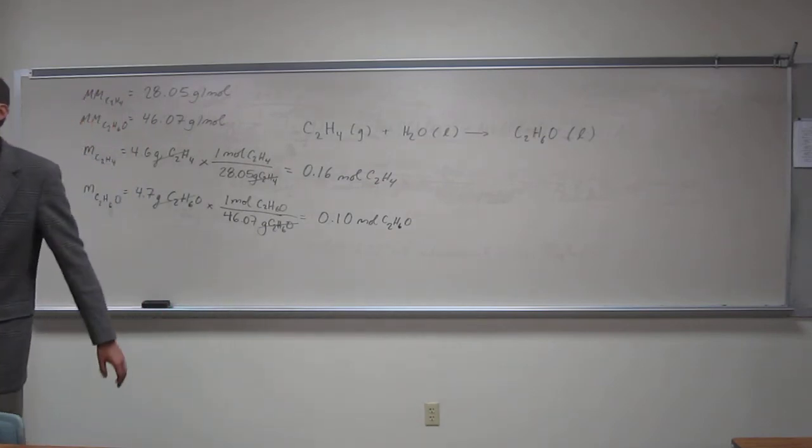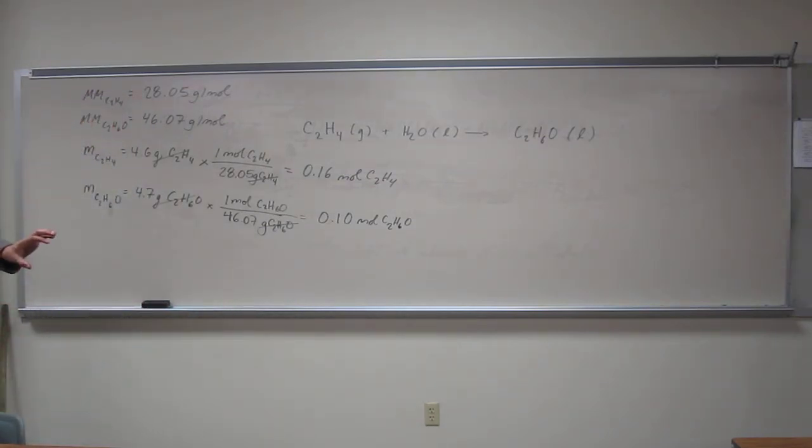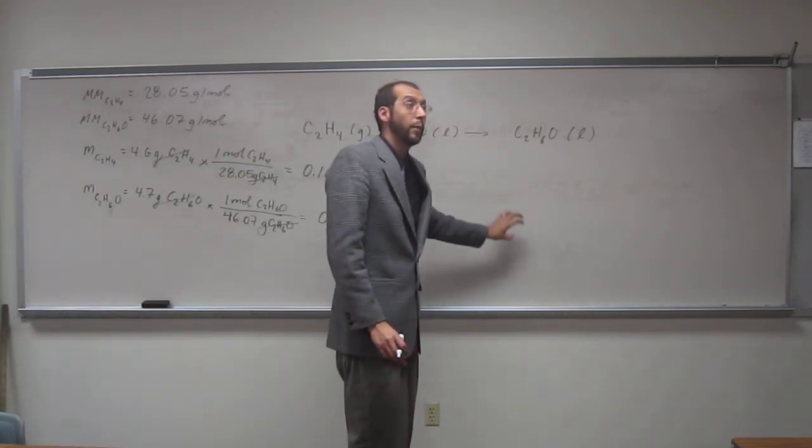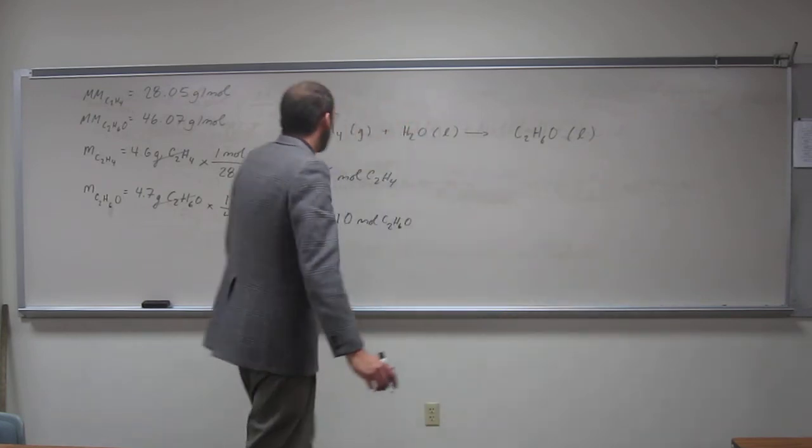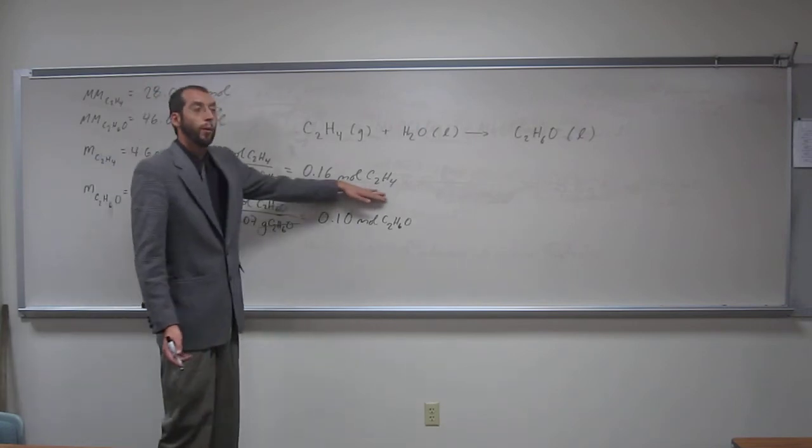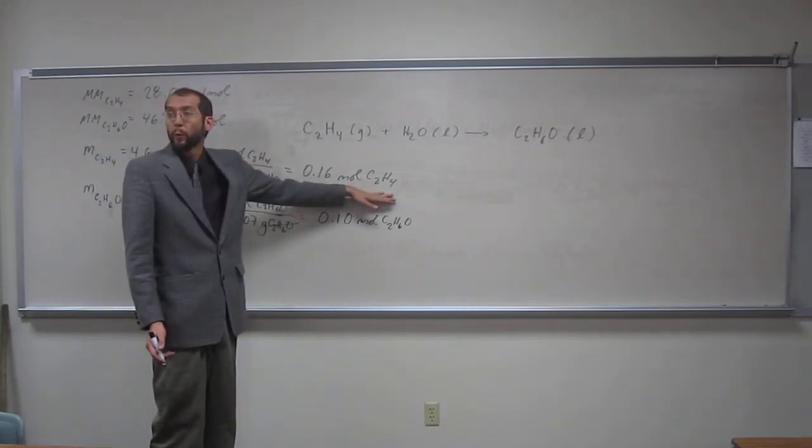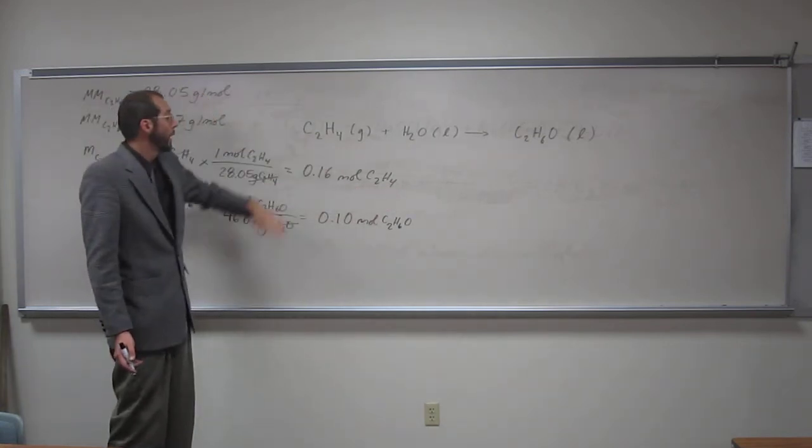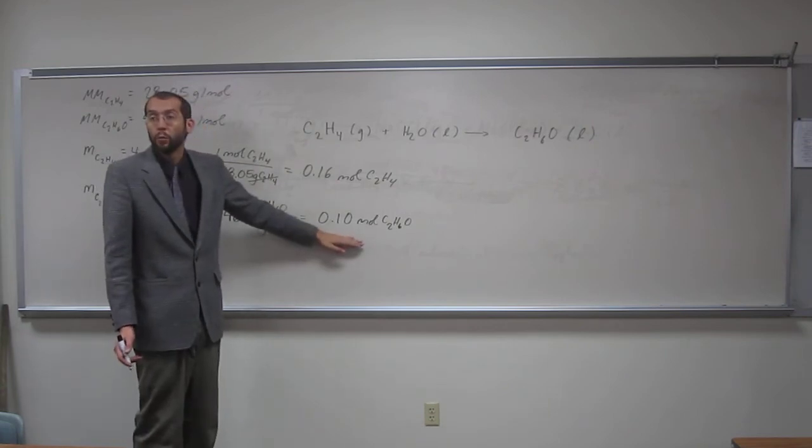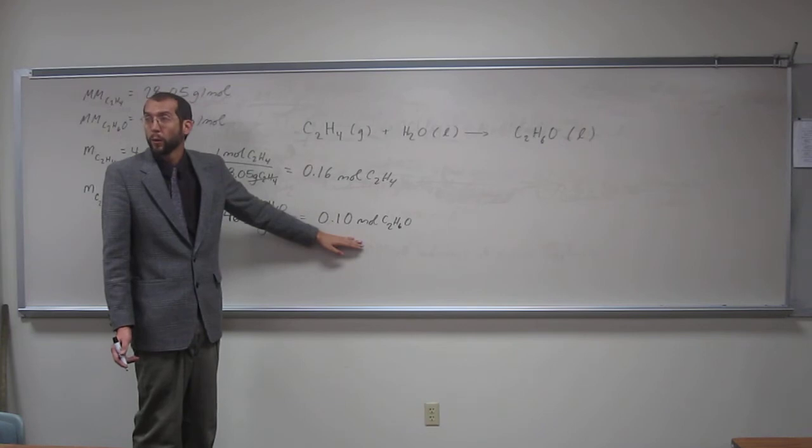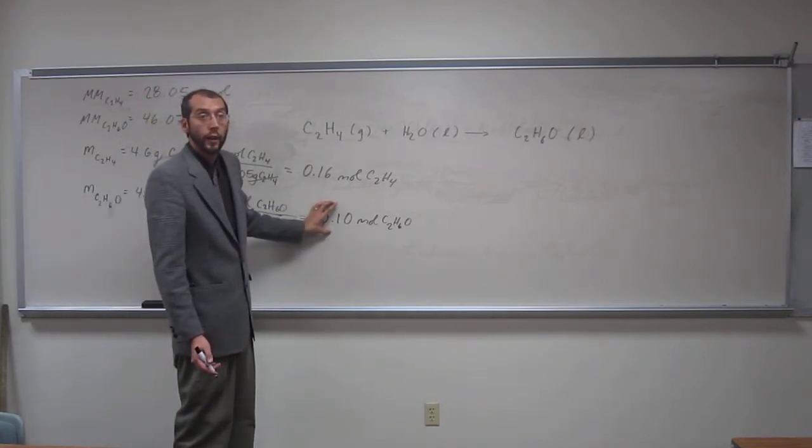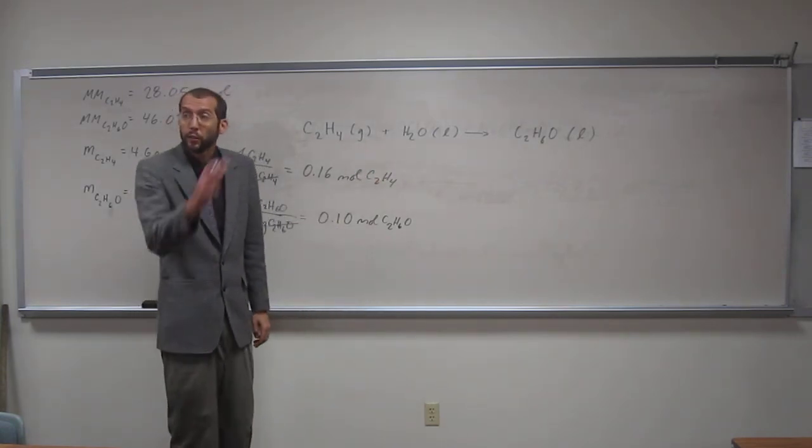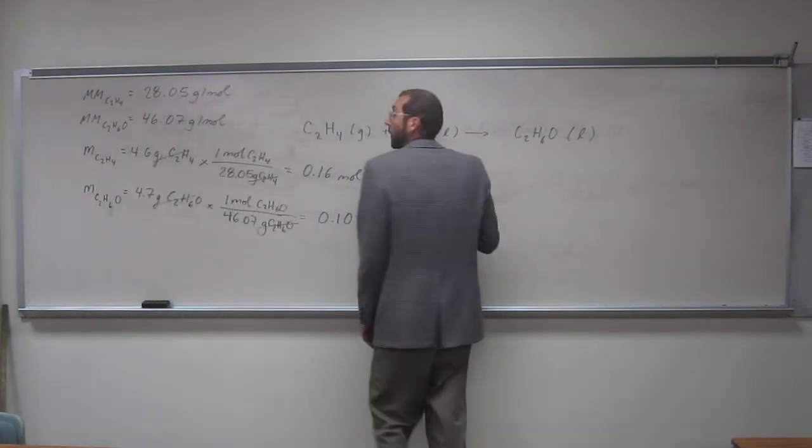Remember, percent anything is number of what you got, or portion, divided by number of total times 100%. The total here is what we started out with. We started out with 0.16 moles of the reactant that we're interested in, and we ended up with 0.10 moles of product. Does everybody understand where I'm going with this? We're going to take the product, divide it by the total number of moles of reactant, and multiply that by 100%.